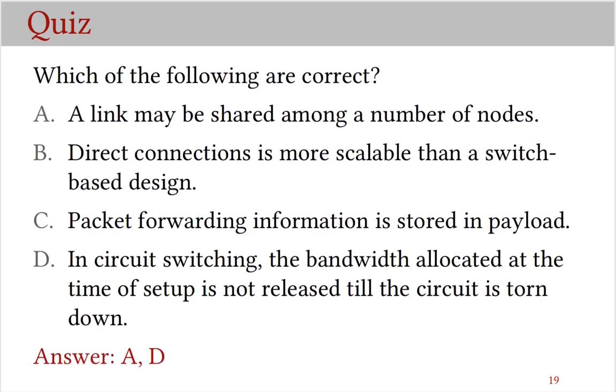The correct options are A and D. A is correct - such links are called multi-access or broadcast links. Option B is wrong. Actually, the switched-based design is scalable and direct connections are not. Option C is wrong. Forwarding information is stored in header and not in payload. Option D is correct. And that's all for this video. See you next time.